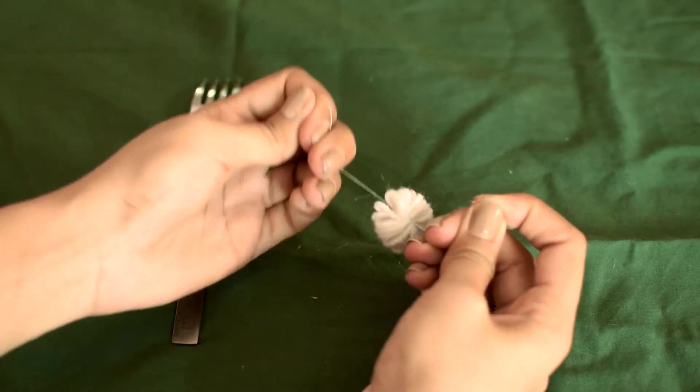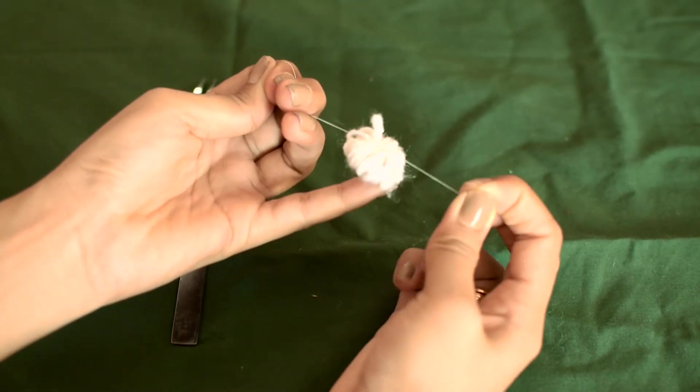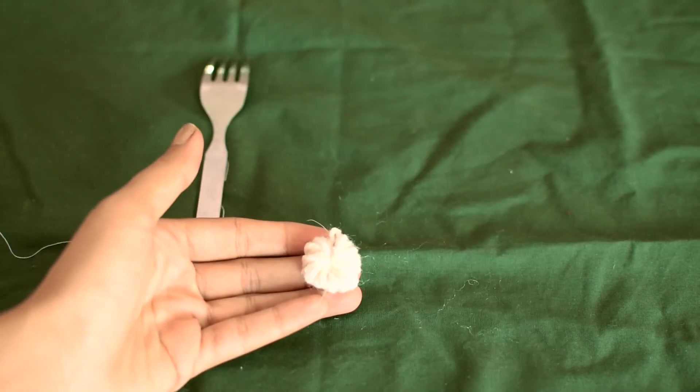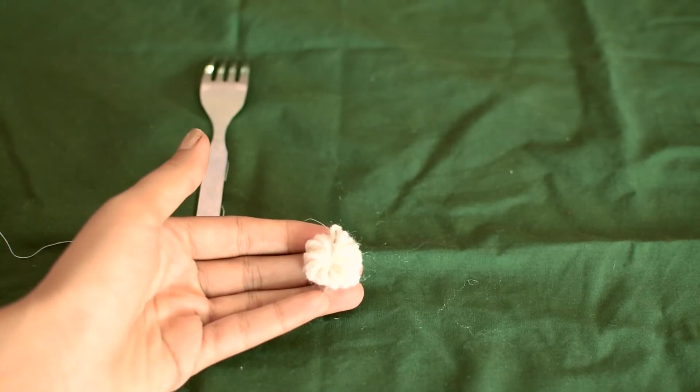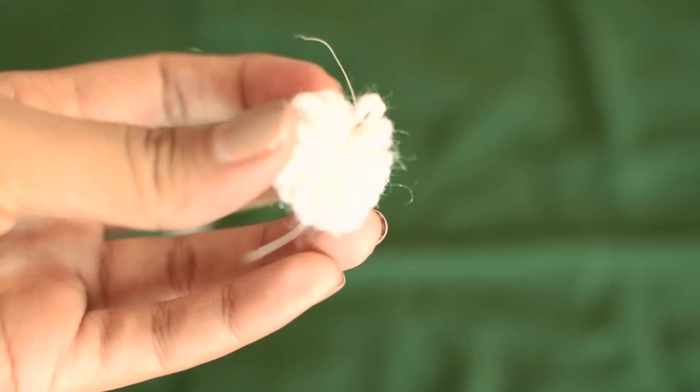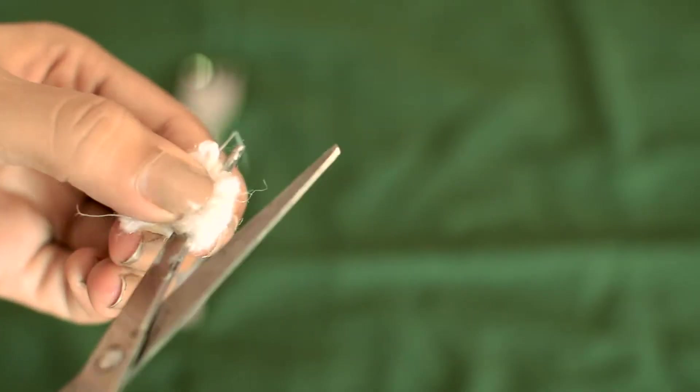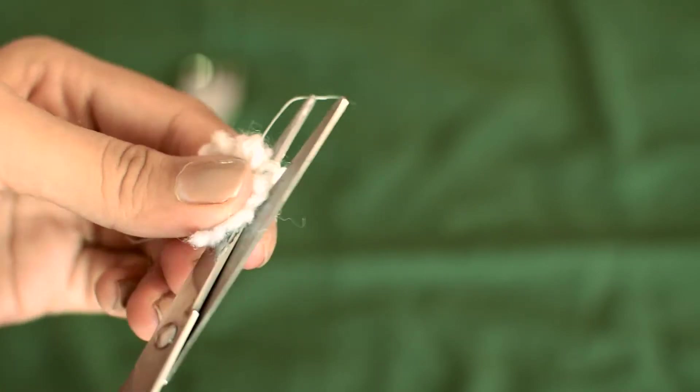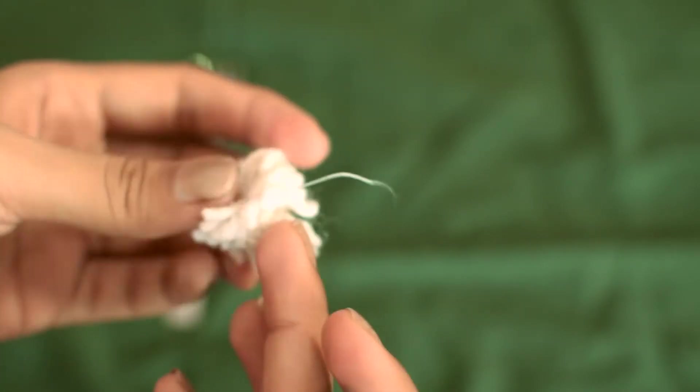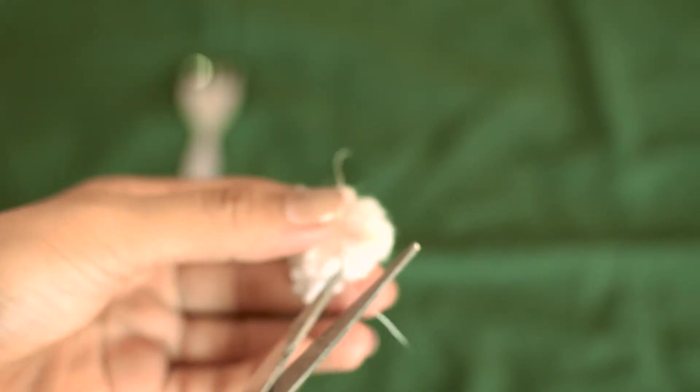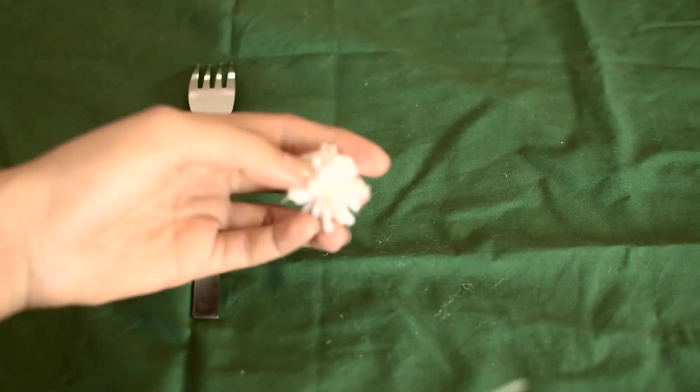It should look something like this, kind of like a flower. Here's a close-up of how it should be looking. Now take your pair of scissors and start cutting off the edges to release the pom-poms. This is how it should look.